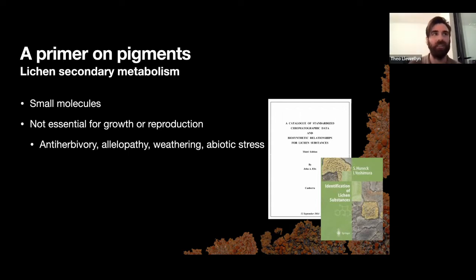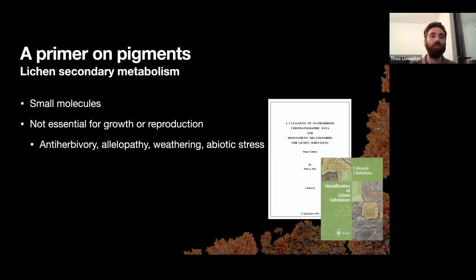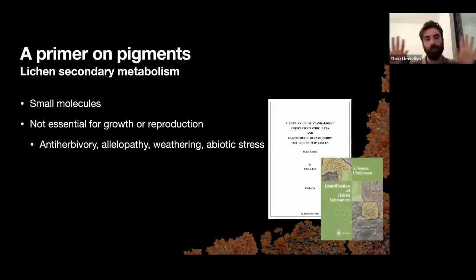Allelopathy is the process by which an organism produces a chemical to prevent the growth of other organisms. You see it in eucalyptus trees, which produce chemicals into the soil to prevent competitors growing. Lichens do this as well — as they have photosynthetic algae, they don't want other things growing on top. You'll often see, especially on rocks where two lichens meet, a black line at the edges of the thallus where these two lichens are producing secondary metabolites to try and kill off the cells of their competitor.